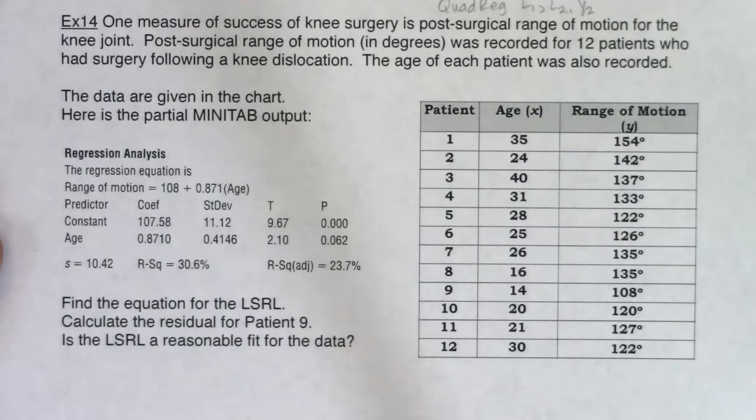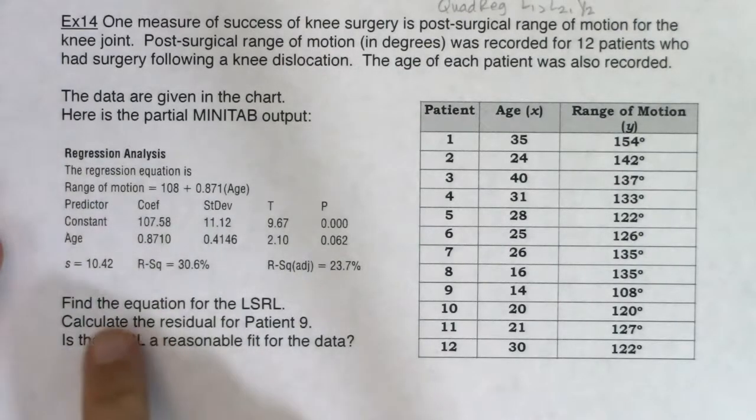One measure of success of knee surgery is post-surgical range of motion for the knee joint. Post-surgical range of motion in degrees was recorded for 12 patients who had knee surgery following a knee dislocation. The age of each patient was also recorded. The data are given in the chart. Here is the Minitab output.